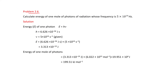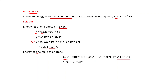Problem 2.6: Calculate the energy of 1 mole of photons of radiation whose frequency is 5 × 10¹⁴ Hz. Using E = hν, where h = 6.626 × 10⁻³⁴ J·s and ν = 5 × 10¹⁴ Hz, we calculate the energy per photon and multiply by Avogadro's number to get approximately 199.51 kJ/mol.